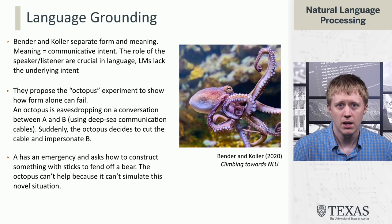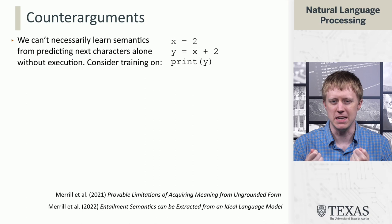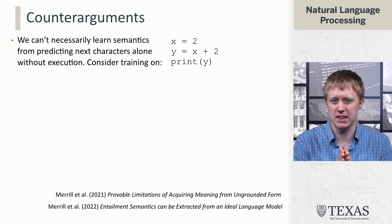That argument leads in the direction of saying that if you're just training a language model on the web, maybe you're not actually going to learn what these symbols mean — you just learn that things co-occur. So if you're doing something like question answering, you're going to generate something that looks like an answer to a question, but it's not the answer.